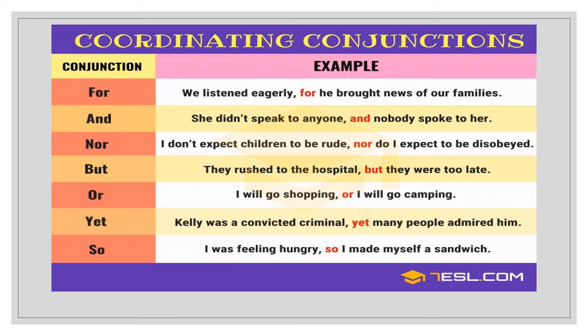For coordinating conjunction, the most simple ones are: for, and, nor, but, or, yet, and so. Note that 'for' here does not work as a preposition — as a conjunction, 'for' means 'because'. For example: 'We listen eagerly, for he brought news for our family' — you can replace 'for' with 'because' and it means the same thing.